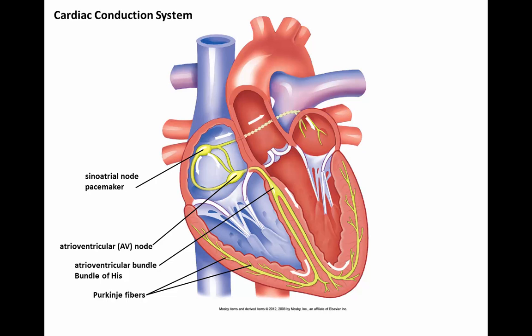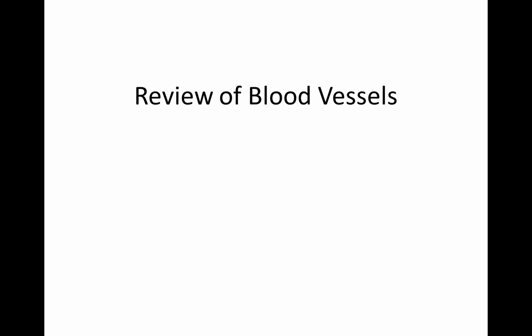The cardiac conduction system: the conduction pathway of electrical signals in the heart begins at the sinoatrial node, also known as the pacemaker, causing the atrial fibers to contract. The impulse then reaches the atrioventricular node, which relays its own impulse by way of the bundle of His, which then branches into the Purkinje fibers. The Purkinje fibers radiate around the ventricles, initiating contraction.